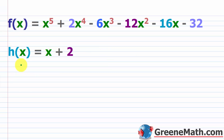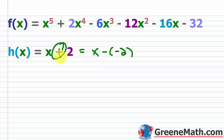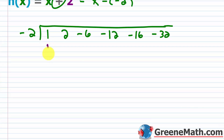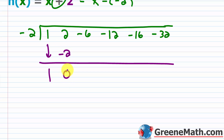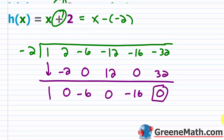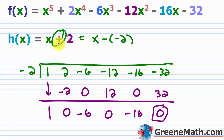Let's look at the same f of x but change the divisor to h of x equals x plus 2. Again, change it to x minus (negative 2) — very important, it's a common mistake. Take negative 2 and coefficients 1, 2, negative 6, negative 12, negative 16, negative 32. Negative 2 times 1 is negative 2; 2 plus negative 2 is 0; negative 2 times 0 is 0; negative 6 plus 0 is negative 6; negative 2 times negative 6 is 12; negative 12 plus 12 is 0; negative 2 times 0 is 0; negative 16 plus 0 is negative 16; negative 2 times negative 16 is 32; negative 32 plus 32 is 0. Remainder is 0, so x plus 2 is a factor — h of x is a factor of f of x.